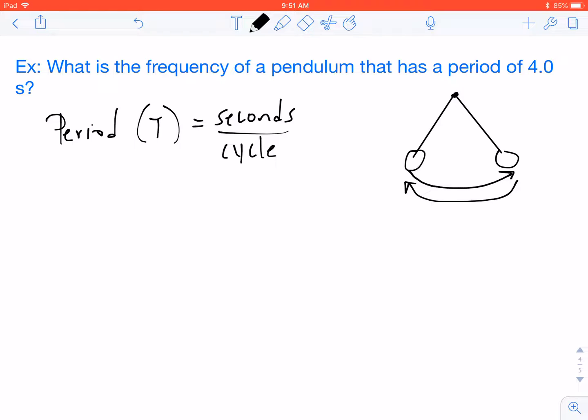In equation form, we call that seconds per cycle. Four seconds per one cycle. Frequency on the other hand, which gets the symbol lowercase f, is the reciprocal of that. It's how many cycles occur in one second.